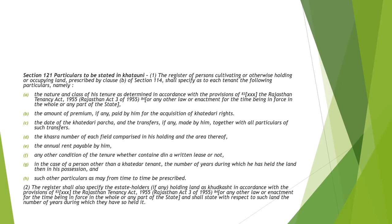Section 121 talks about the particulars to be stated in the Quatani — what particulars should be specified as to each tenant. These include the nature and class of his tenure, the amount of premium, the date of khatad parcha, the khasra number of each field, the annual rent payable by him, any other conditions of the tenure, or whether in the case of a person other than a khatidari tenant, the number of years during which he has held the land in his possession, and such other particulars as may from time to time be prescribed. The registrar shall also specify the estate holders.